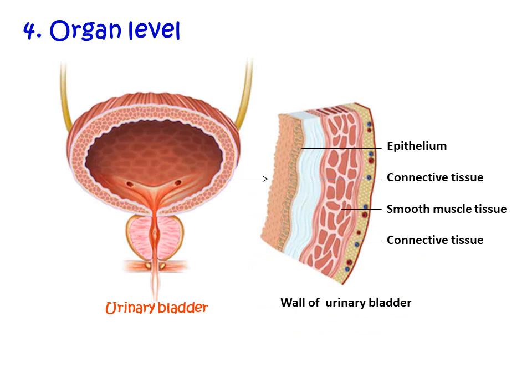The fourth is the organ level of organization, where different tissues combine together to form organs that have one or more common functions. For example, epithelium, connective tissue, and smooth muscle are combined together to form the wall of the urinary bladder, making it an organ. Examples of organs include the skin, stomach, eye, heart, and kidneys.